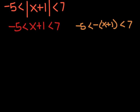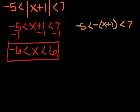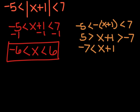Do you see how this is a compound inequality — it's got two parts. All you have to do is subtract 1 from all sides. So I take away 1, take away 1, and take away 1: I've got negative 6 is less than x is less than 6. Over here, let's divide out the negative 1 first. So we've got 5, switch the sign, x plus 1, switch the sign, and negative 7. I don't like to have it backwards, so I'll reverse it: negative 7 is less than x plus 1 is less than 5. Then when we take away 1: negative 8 is less than x is less than 4.